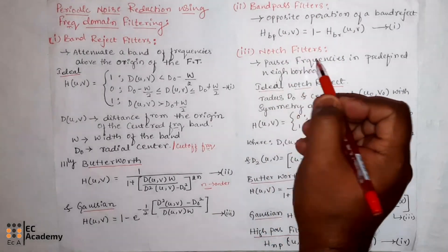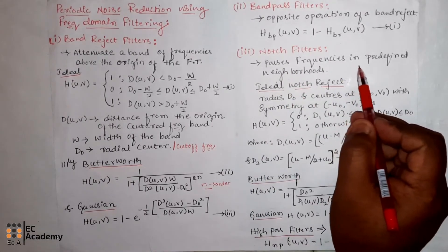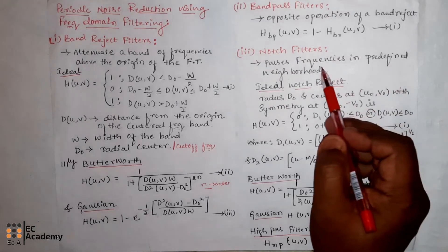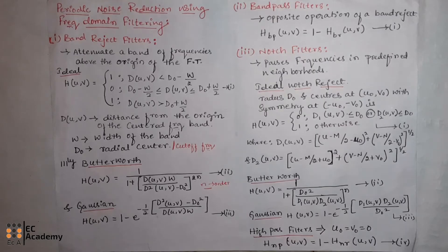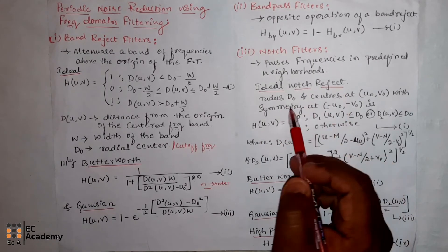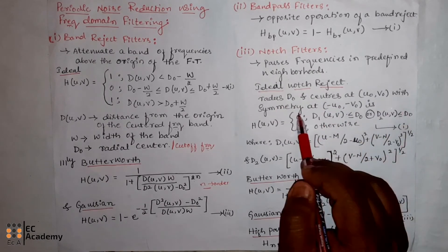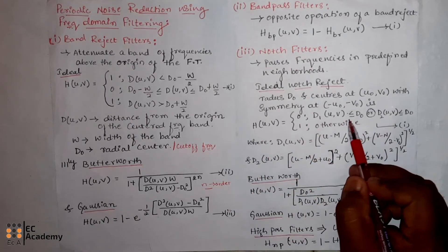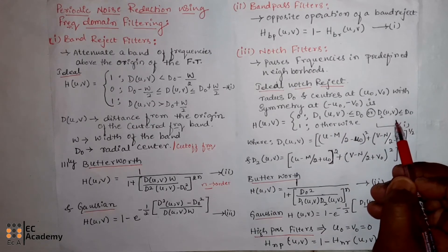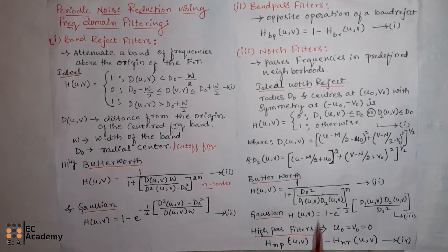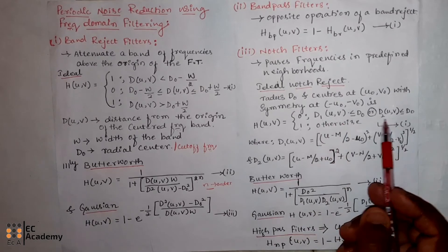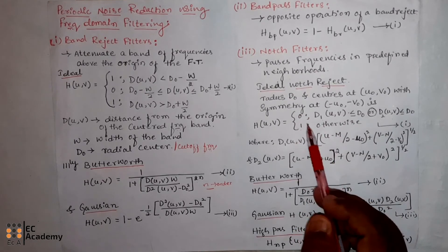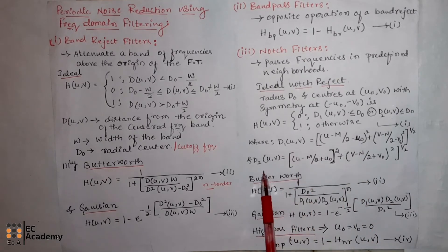The next type of filter is the notch filter. A notch filter passes frequencies in a predefined neighborhood at the center frequency. The transfer function of the ideal notch reject filter of radius d0 and centers at (u0, v0) with symmetry at (-u0, -v0) is: h(u,v) = 0 for d0 less than or equal to d1(u,v) and d0 less than or equal to d2(u,v), and 1 otherwise. The formulas for d1(u,v) and d2(u,v) are defined accordingly.